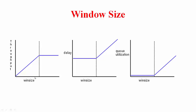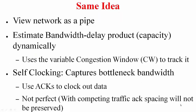As long as W is less than the bandwidth-delay product, throughput is dictated by W because the link is idle part of the time. The maximum throughput is achieved at W equal to the bandwidth-delay product; beyond that, throughput levels off at the bottleneck bandwidth regardless of how much you increase W. If you increase W further, delays progressively increase and queues build up. Congestion control aims to operate in the range where you fully utilize bandwidth without causing congestion. The key is estimating this bandwidth-delay product.